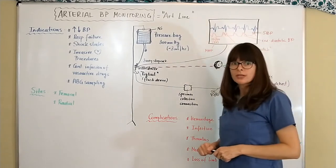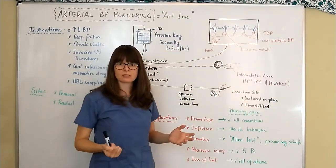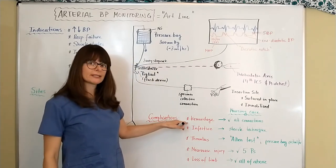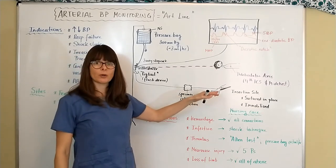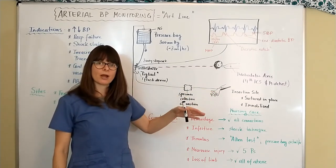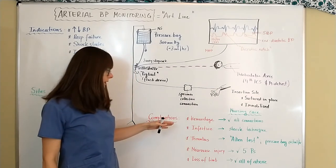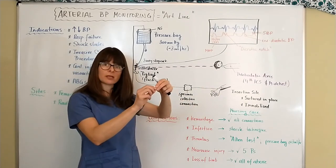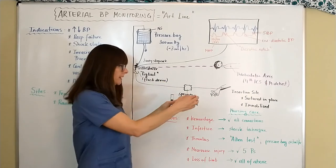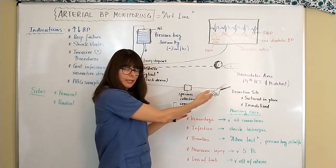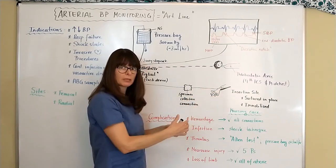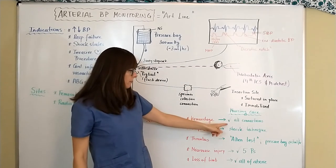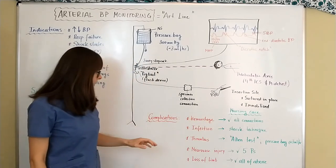So now let's look at possible complications and associated nursing care that we can do so that the patient doesn't suffer any of these complications. Number one is hemorrhage. Keep in mind this is inserted into an artery and arteries are much more pressurized than veins, so there's a high risk for hemorrhage. For example, if this luer lock hooked to the patient is loose or comes undone then the artery would basically leak out blood and we might not know about it and the patient could be hemorrhaging. That applies to any of the connections in the tubing so we always want to make sure that we check all of our connections.